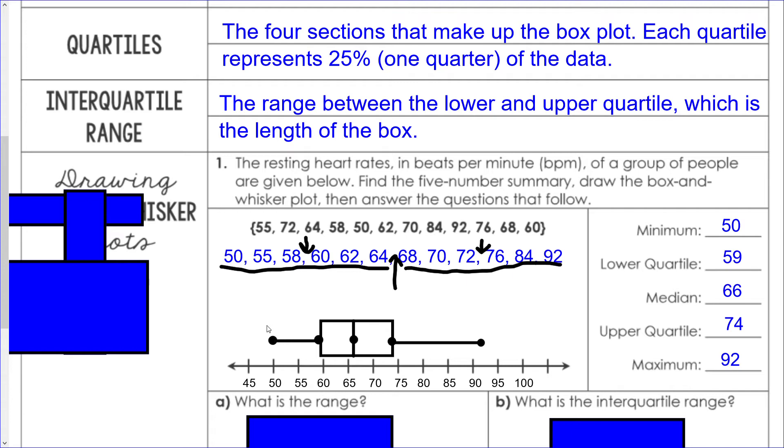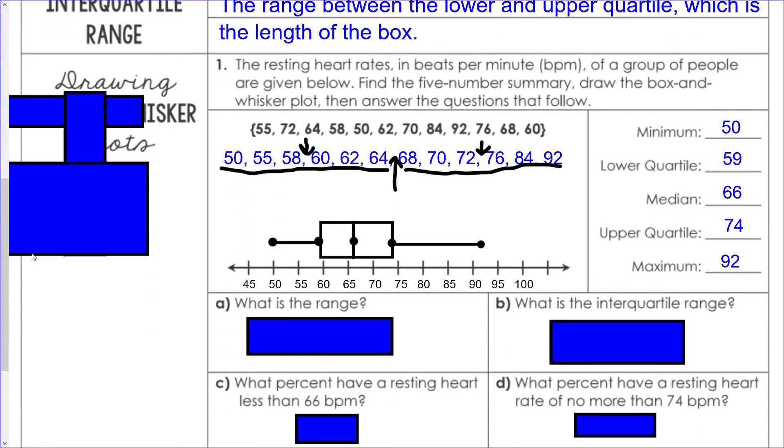We've got our minimum here, our lower quartile is at 59, our median is 66, our upper quartile is 74, and our maximum is 92. As you're drawing it, the box goes from lower quartile to upper quartile, median gets its own line in the middle, and then you draw a line up to the maximum and down to the minimum.